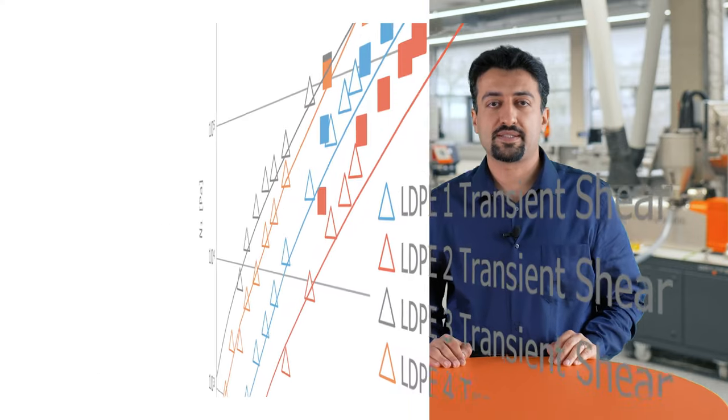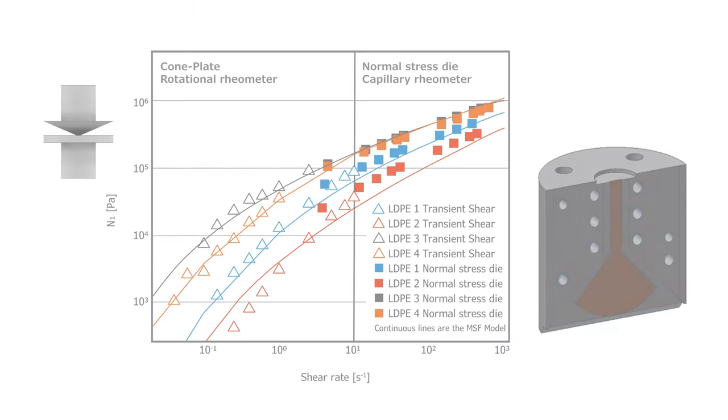In the radial part of the die, on the other hand, you can measure first normal stress. As you can see, the values of first normal stress difference measured by cone and plate geometry at low shear rates is compared with the values of first normal stress difference taken from the radial part of the die at high shear rates.